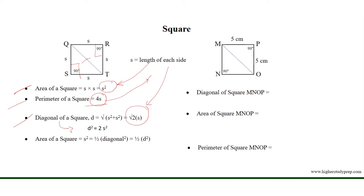From this formula, the square of the diagonal equals two times the square of the length of each side, which allows us to express the area of the square in terms of the diagonal: area equals half of the square of the diagonal's length.